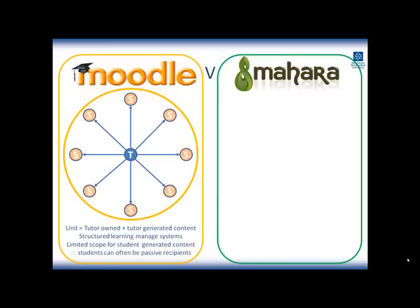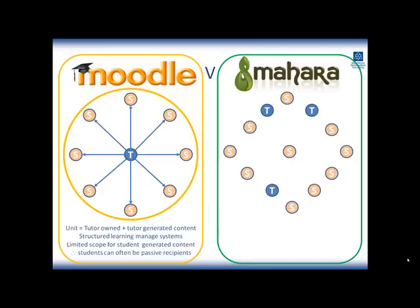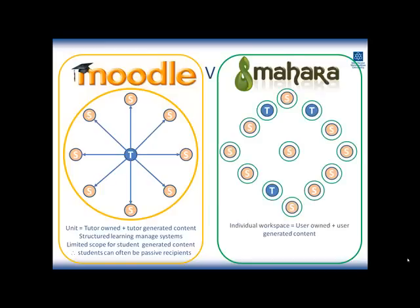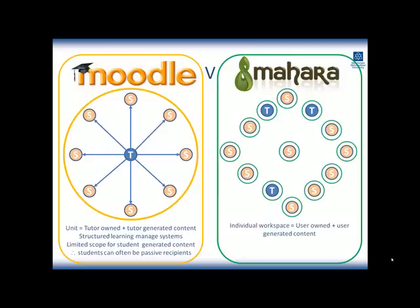Organisationally, Mahara is very different. Each user is provided with their own individual private workspace in which they can create content and collect their own content, or as Mahara refers to it, artefacts. Students and tutors, to all intents and purposes, are provided with the same type of workspace and have access to the same tools and functionality. The Mahara workspace enables students to build pages using any of the content that they have created or added to Mahara, as well as from a wide range of content from other online tools that may form part of their digital identity.